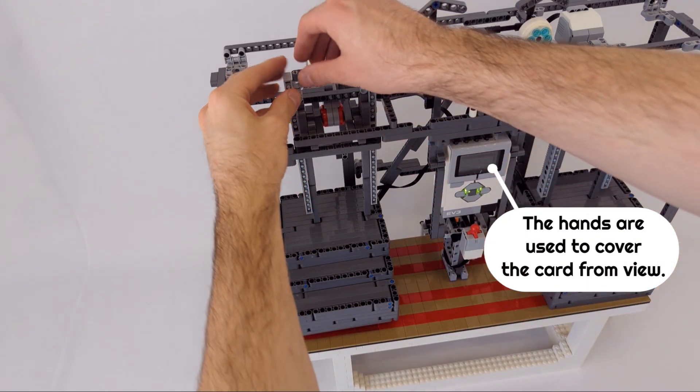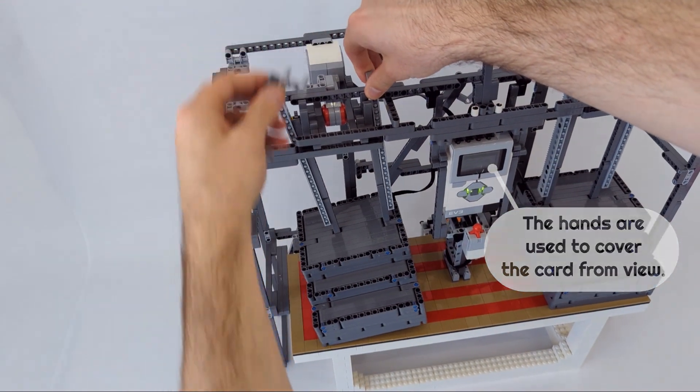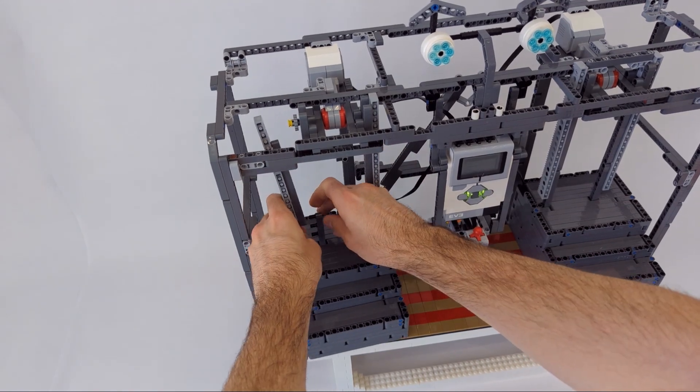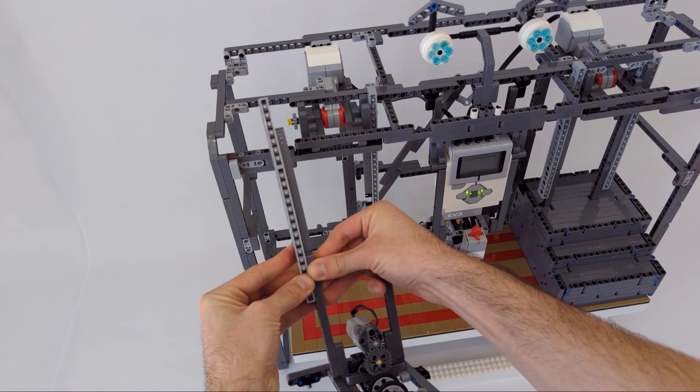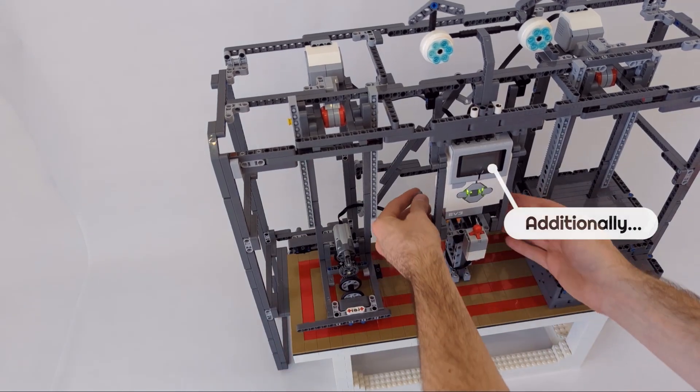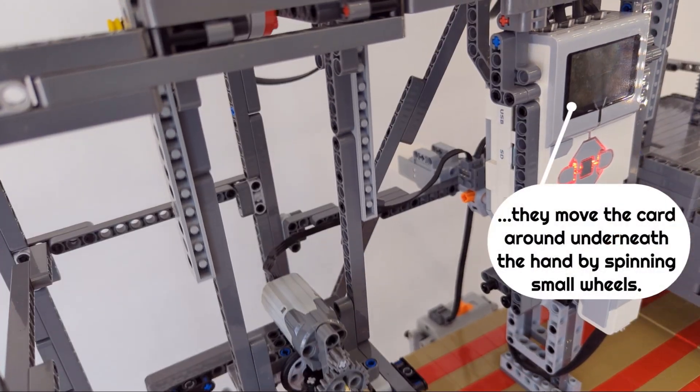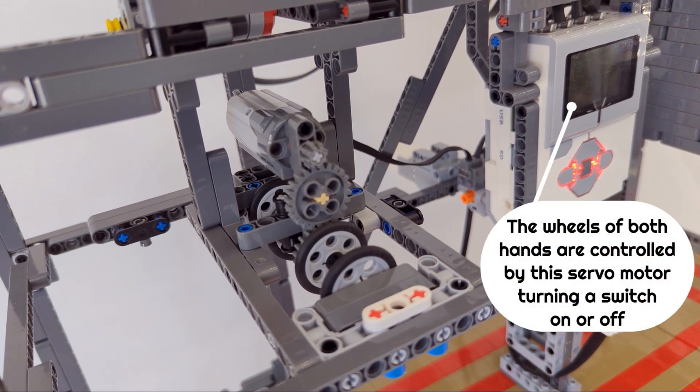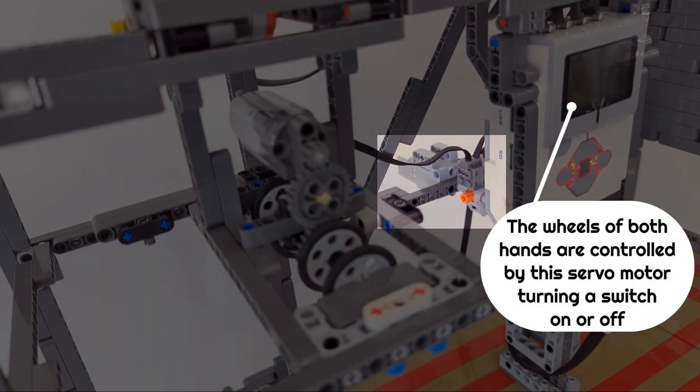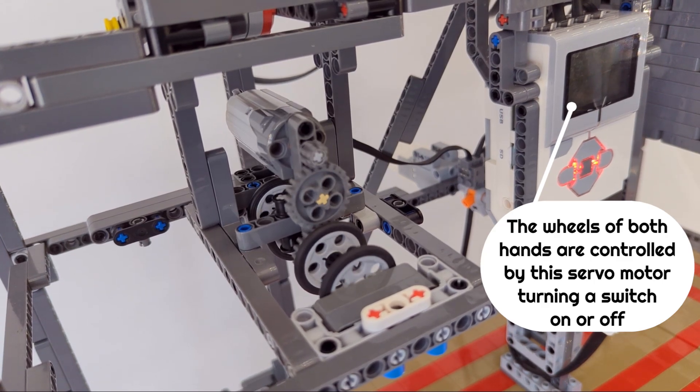The hands are used to cover the card from view. Additionally, they move the card around underneath the hand by spinning small wheels. The wheels of both hands are controlled by this servo motor, turning a switch on or off.